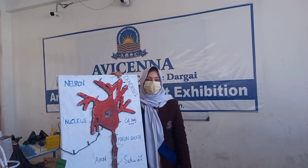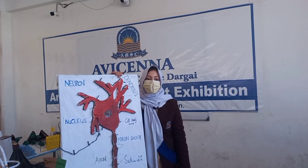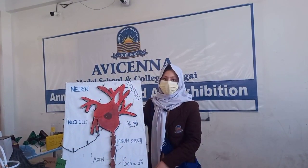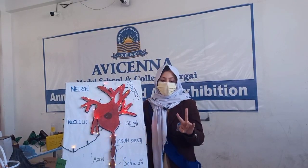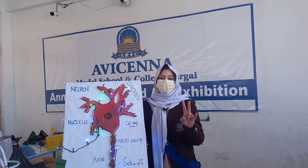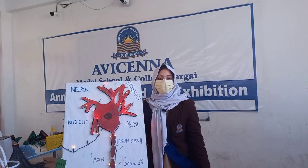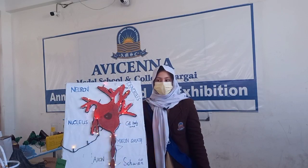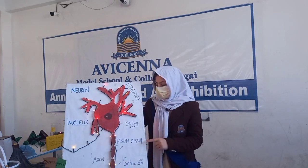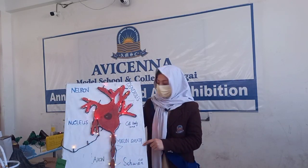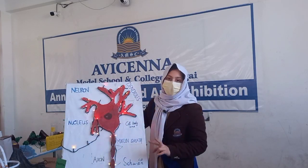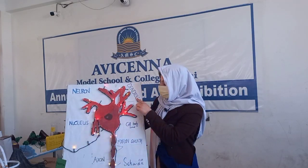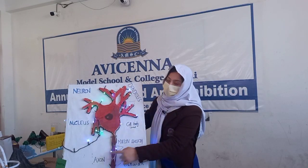My name is Sumiya Shaker from class 7A from Sir Syed House. My model is the Structure of Neuron. The neuron has two parts: CNS and PNS. CNS is central nervous system. PNS is peripheral nervous system. Neurons are part of the central nervous system. The neuron has three main parts: dendrites, cell body, and axon.